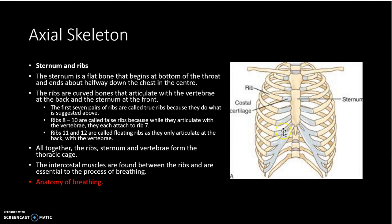There is significant cartilage in the thoracic cage which allows for much more movement, and this is really important for breathing because the cage expands outwards when we breathe in and collapses inwards when we breathe out. If it had no movement available to it, the expansion and contraction of the lungs would be very, very difficult.